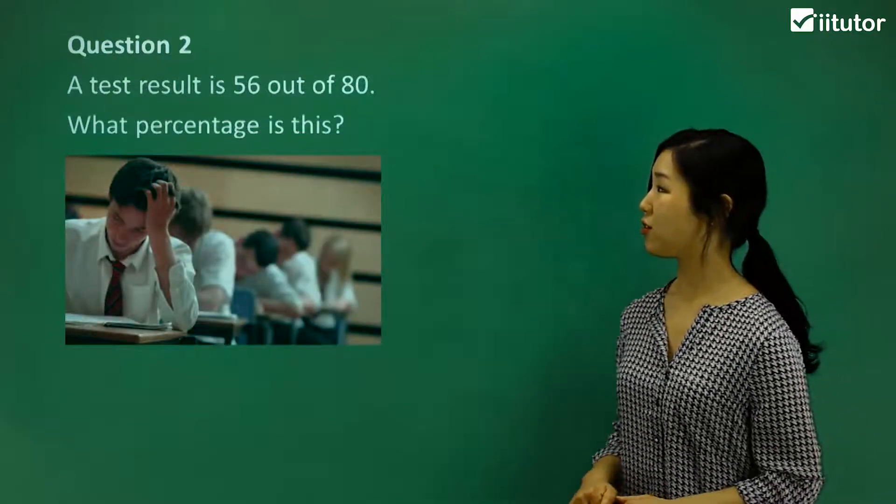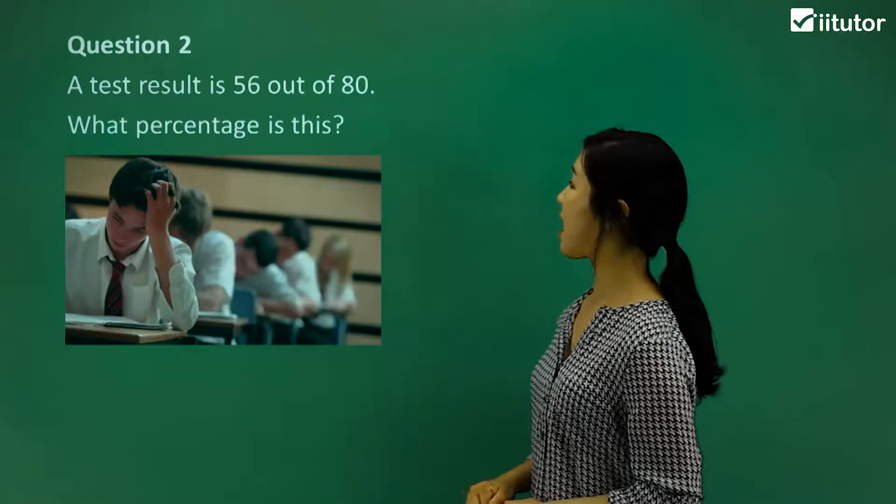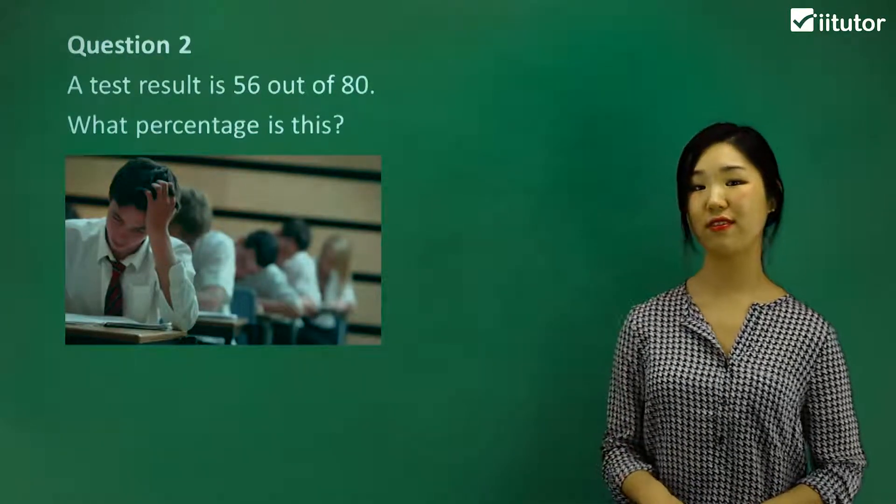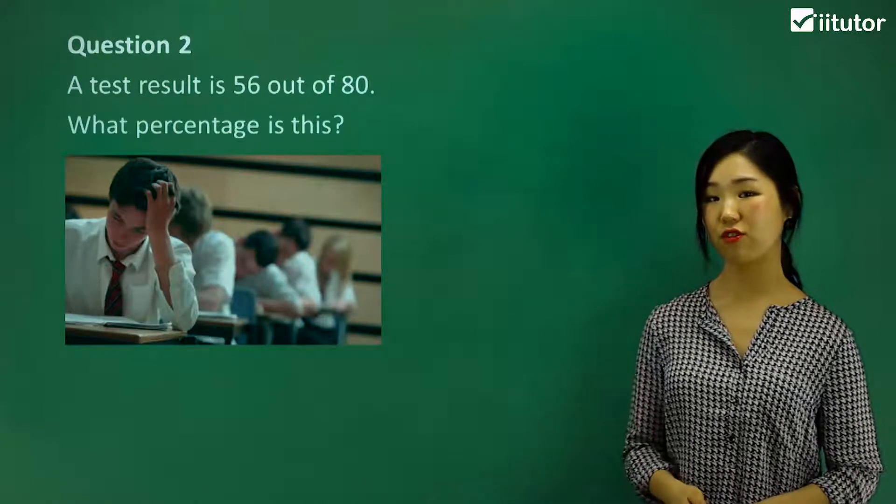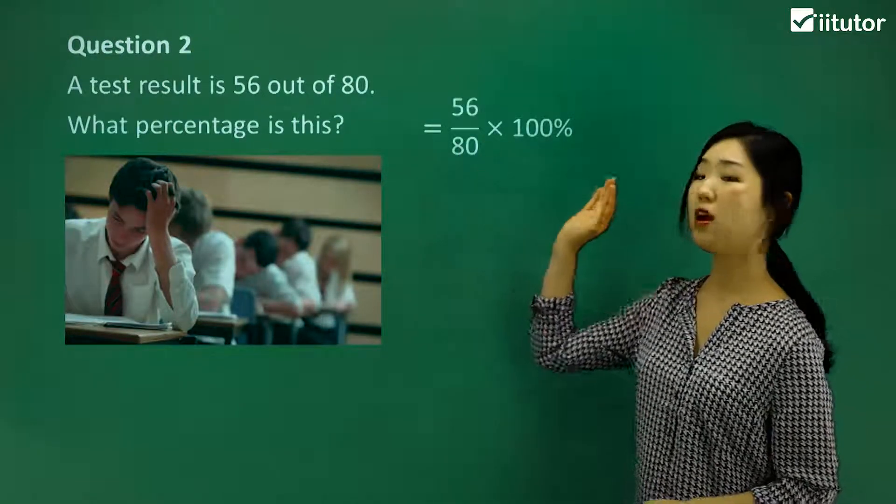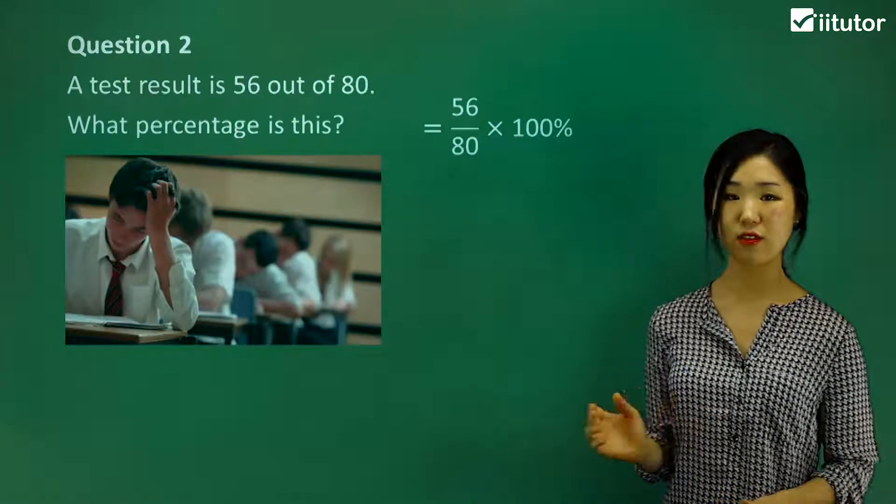Now question two. A test result is 56 out of 80. What percentage is this? Well, to get percentage of a particular fraction, we'll multiply the fraction by the 100%. That's all you need to do.